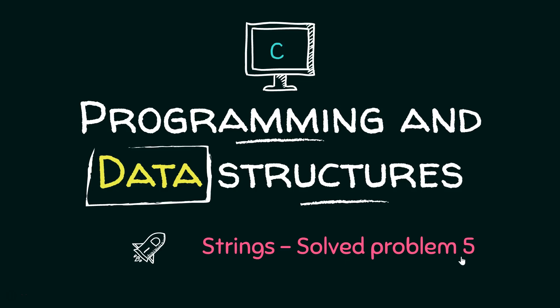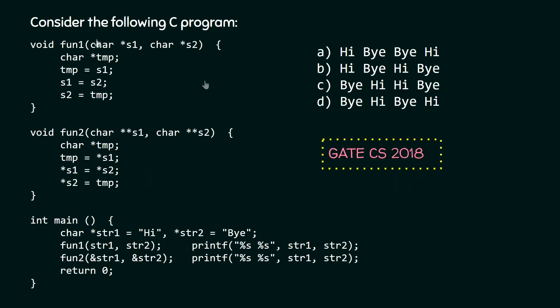Let's consider and solve problem 5 on strings. Consider the following C program. The program and options are available in front of you. You need to determine the output of this program. This question has been asked in GateCS 2018. I would encourage you to pause the video for a while and try to answer this question on your own.